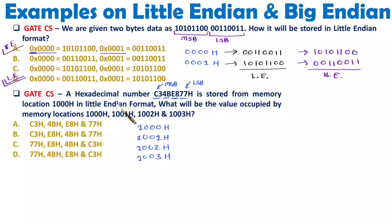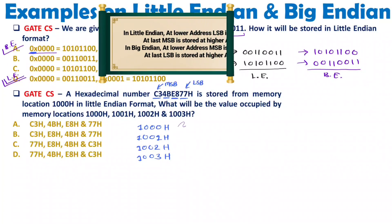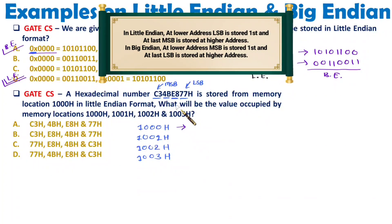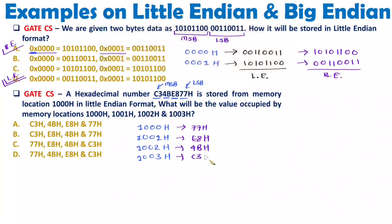In little-endian, at the first address you store the LSB. At lower address, the lower byte gets stored. So at 1000 hex, you store 77 hex; at 1001 hex, you store E8 hex; at 1002 hex, you store 4B hex; and at 1003 hex, you store C3 hex. That is how the data is stored in little-endian structure.